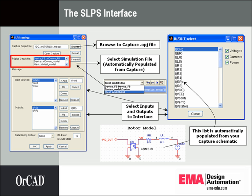You point to the project file from here. The open Capture button allows you to browse for it, and from within there you will be able to select one of your PSPICE circuit files. These are your simulation settings which you already set up in PSPICE — you can select the one you'd like to use. They appear like this in Capture.